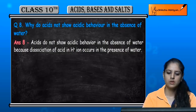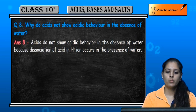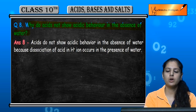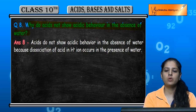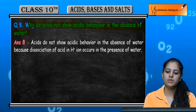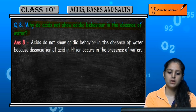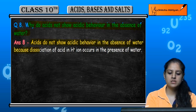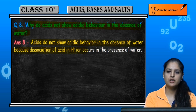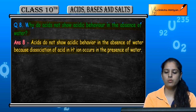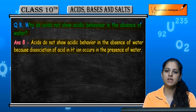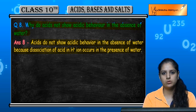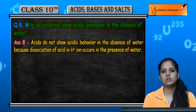Question number eight: why do acids not show acidic behavior in the absence of water? Acids do not show acidic behavior in the absence of water because dissociation of acid into H⁺ ions occurs only in the presence of water. When H⁺ ions are dissociated or ionized, that dissociation cannot be done without water.